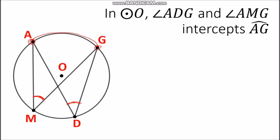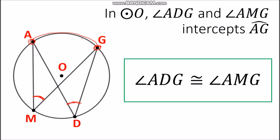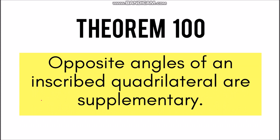Both the endpoints of the two angles are also the endpoints of arc AG, so that means they intercept that arc. Applying Theorem 99, since they intercept the same arc, therefore angle ADG must be congruent with angle AMG.